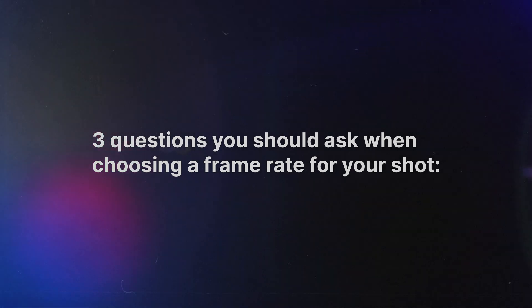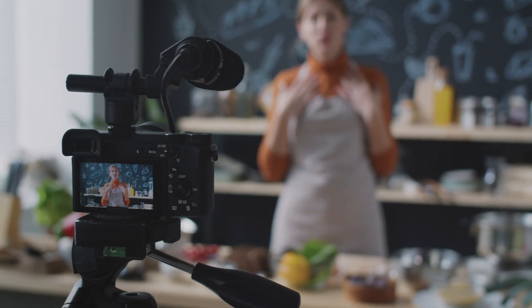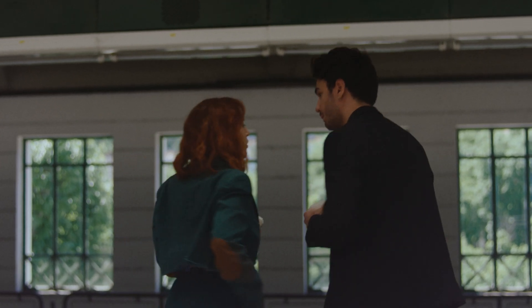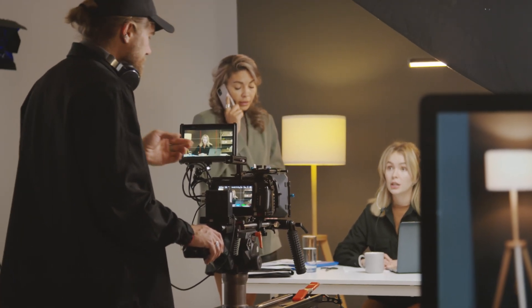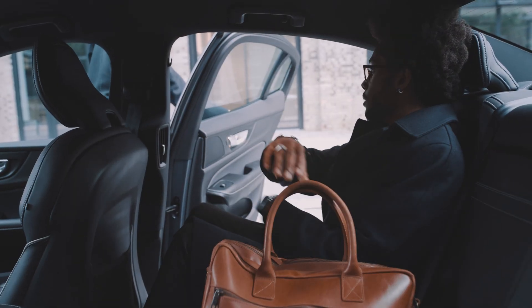Here are three main questions to ask yourself when choosing a frame rate. First: are you recording sound or dialogue? When filming something with spoken dialogue like an interview, or capturing audio alongside your footage, always shoot in the same frame rate as your editing timeline — typically 24 or 25 FPS. If you conform 30 or 60 FPS footage shot with audio to a 24 FPS timeline, your audio will go out of sync. Natural frame rates also work best with real-time sound effects, whereas slow motion can feel disconnected and requires special sound design.